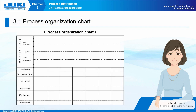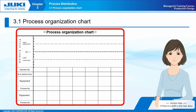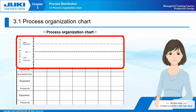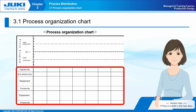3-1 Process Organization Chart. A process organization chart is a document that combines a pitch diagram, in which the time taken by each operator is obtained and shown graphically in process order, and a table under the pitch diagram that describes the time taken by each operator, the equipment, and the process number, in order to grasp the state of the line balance.